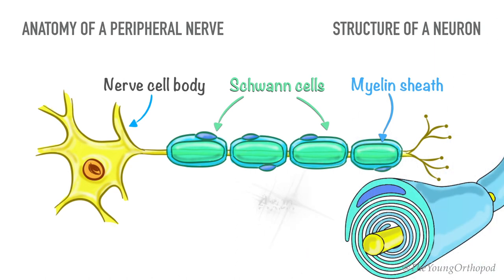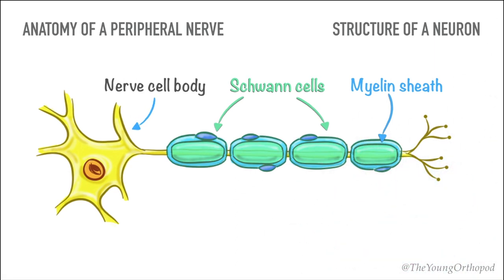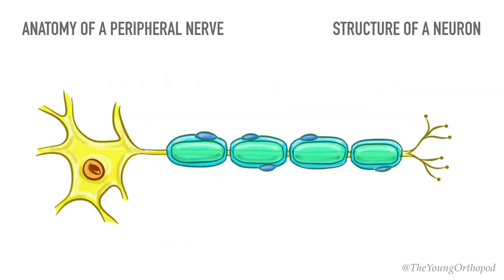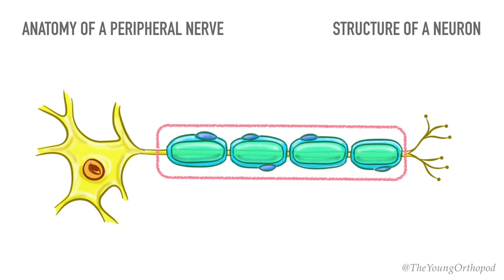The segment of myelinated nerve fiber enclosed by a single Schwann cell is referred to as an internode. The point at which one Schwann cell ends and the next begins is called the nodal gap, or the node of Ranvier. The axon with its Schwann cell and myelin sheath is covered all around by a delicate tube-like fibrous tissue membrane called the endoneurium.